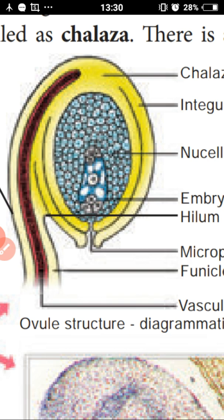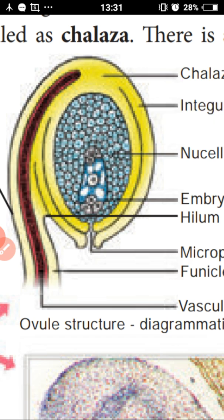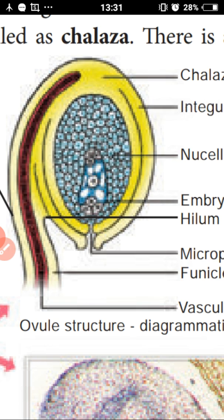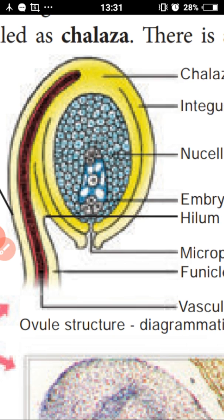The ovule is made up of a central mass of parenchyma cells called the nucellus, which has large reserve food materials. The nucellus provides nutrition to the ovule. The nucellus is enveloped by one or two protective layers called integuments. Integuments enclose the nucellus completely except at the top, where a small pore called the micropyle is formed.